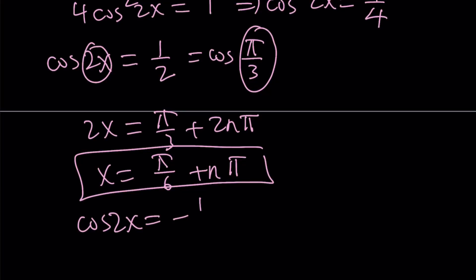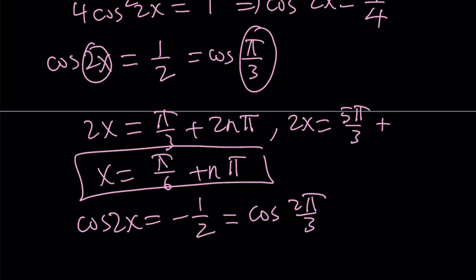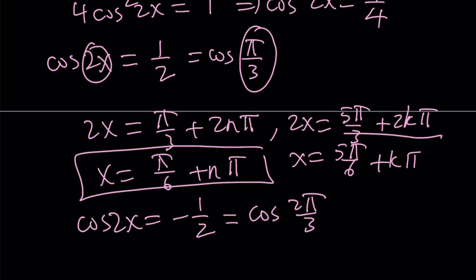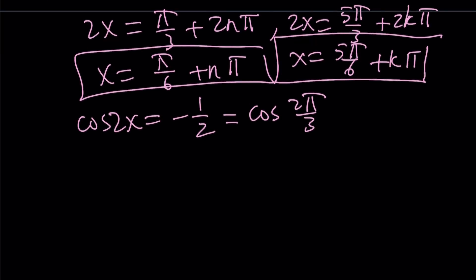For cosine 2x equals negative 1/2, we reflect the angle over the y-axis, subtracting π/3 from π, giving us 2π/3. So 2x equals 2π/3 plus 2nπ, and x equals π/3 plus nπ. Also, going back to the first set, cosine is an even function, so 2x could also equal 5π/3 plus 2kπ, giving x equals 5π/6 plus kπ. Similarly for the negative case, 2x can equal 4π/3 plus 2rπ, giving x equals 2π/3 plus rπ.